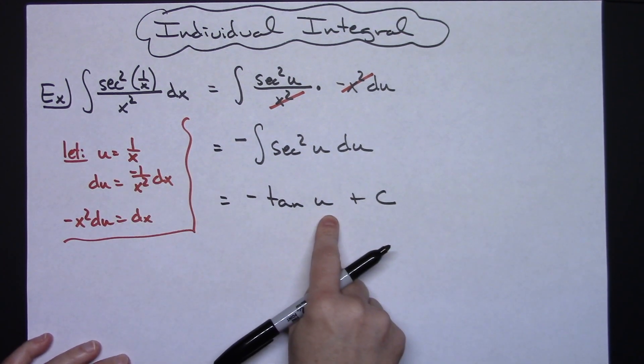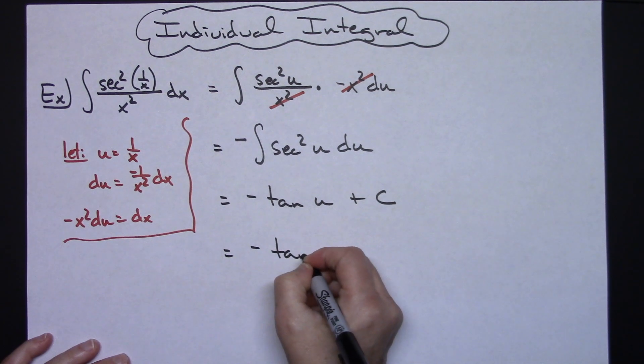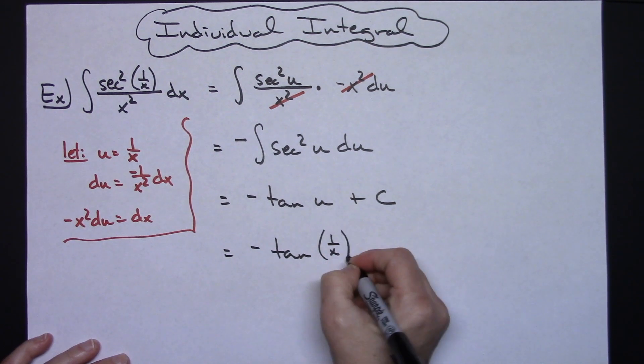Replacing u with what it equals, we will have a negative tangent 1 over x plus c.